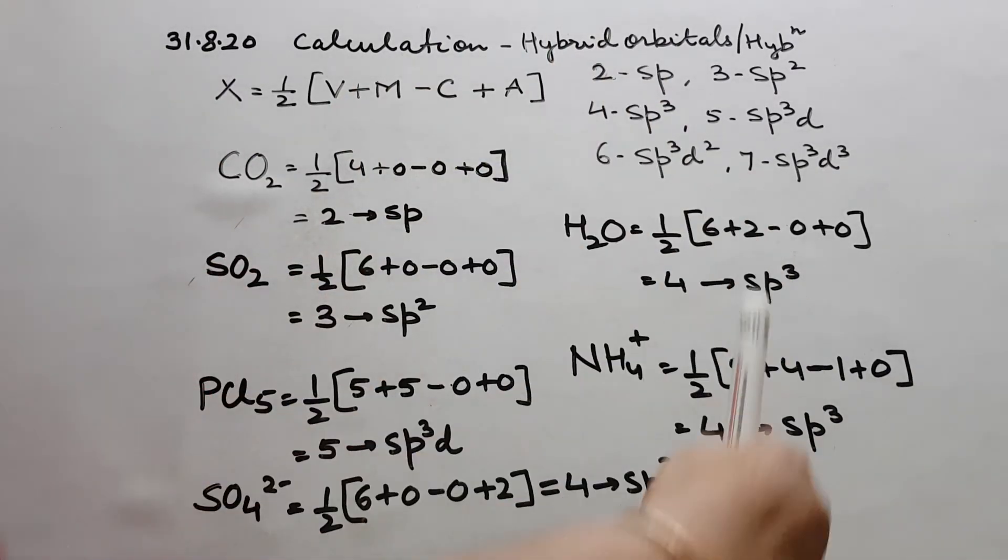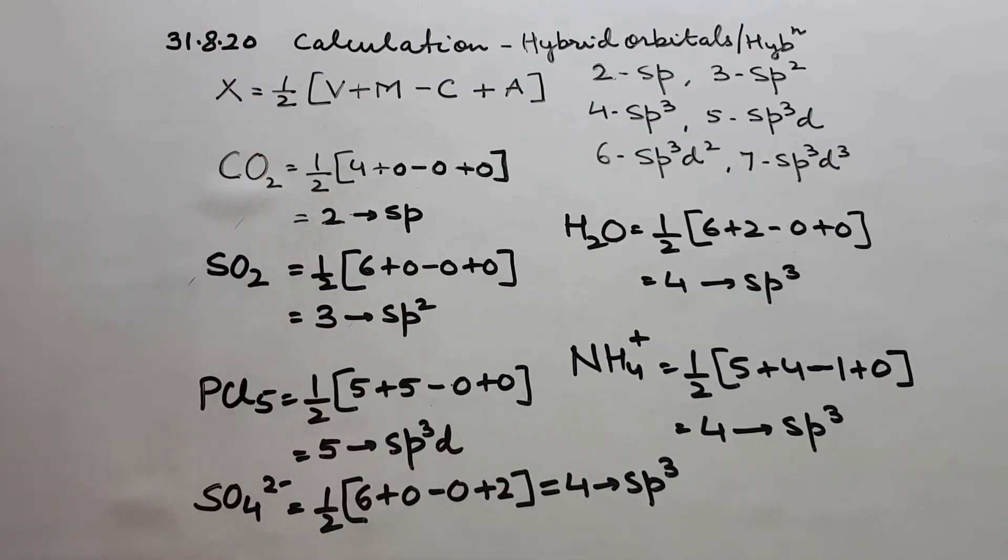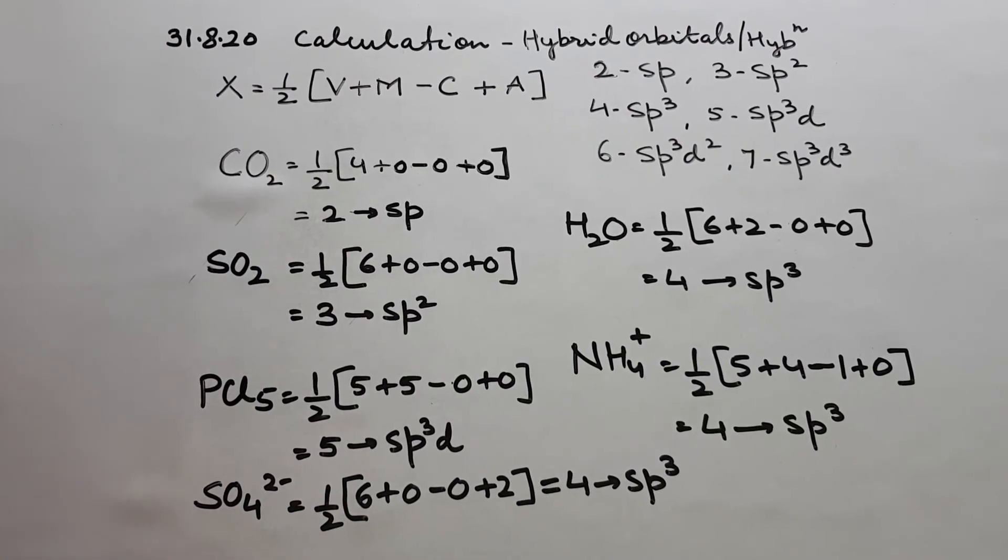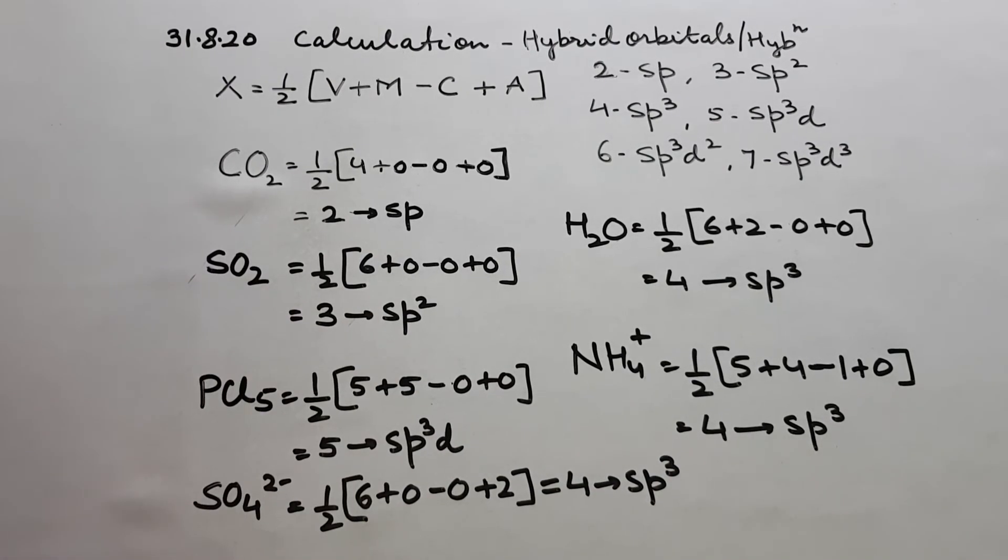That's how we do it and we find out here. So this is how children, I gave you some examples to find out hybridization. Hope it is clear. It's not a difficult thing. One more thing children. Suppose we get the number of electrons after addition as odd number. Say it comes out to be 7. 7 by 2 means 3.5.